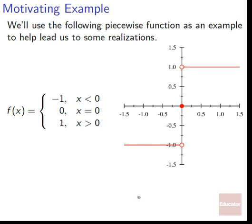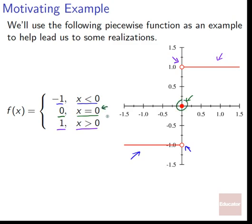First, we'll set up a motivating example so we can have some realizations pop out of it. So this piecewise function example will lead us to some ideas. We've got negative 1 when x is less than 0, that's the portion right here. We've got 0 when x equals 0, that's the portion right there. And we've got positive 1 when x is greater than 0. Notice how there are holes at exactly x equals 0 on the top and bottom, because it jumps to the middle portion when it's actually at x equals 0.